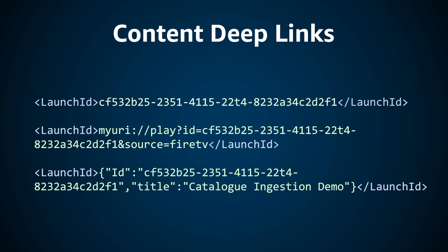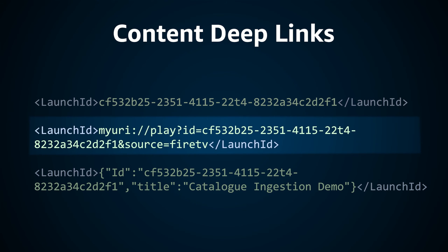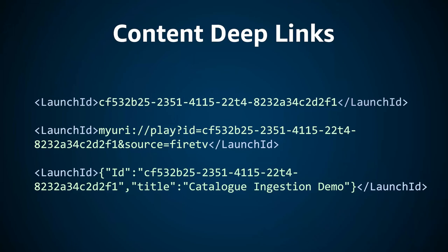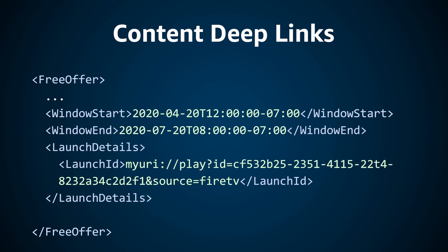One of the most vital pieces of information you'll need to include are your content deep links. You have a few options for how exactly you format this in order to best fit your native app's functionality. For example, your information will be fetched differently when using the unique ID of your content versus an actual URI deep link. We suggest using launch ID as your tag, as it will be the tag you use to fetch the deep link from your native application. Putting all of this together, we can see an example of a free offer with a time-limited window and a URI deep link for the content itself.